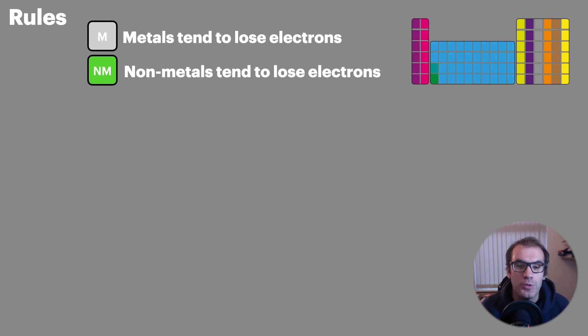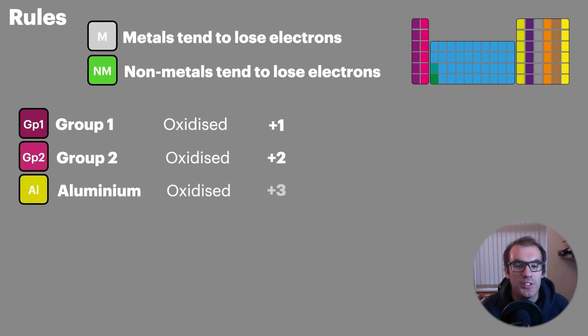The following rules are used for elements combined into compounds. Group one elements are oxidized to an oxidation state of plus one. Group two elements are oxidized to be plus two and aluminium is oxidized to be plus three. Looking at our non-metals then, group seven is reduced to be minus one and oxygen is reduced to be minus two.